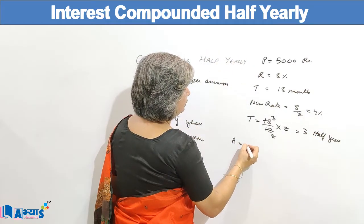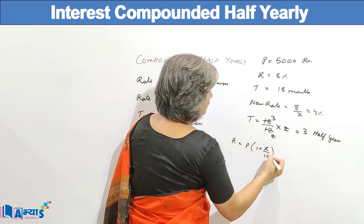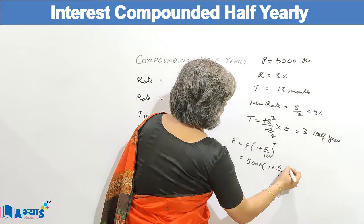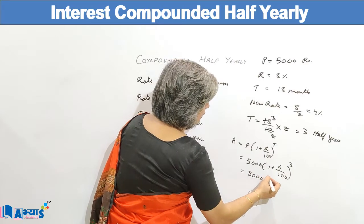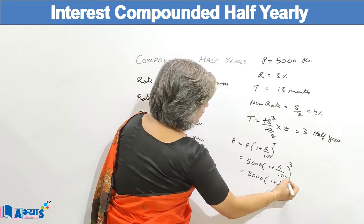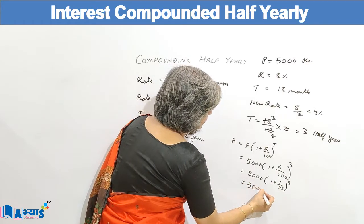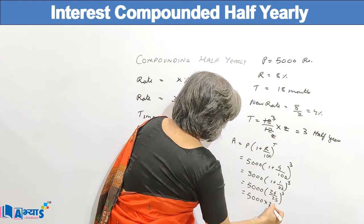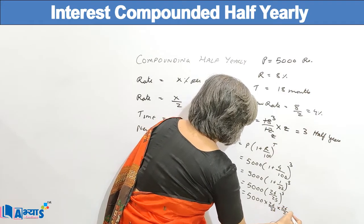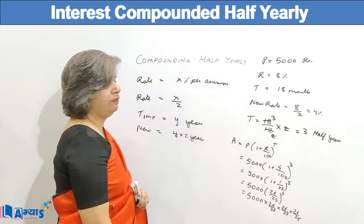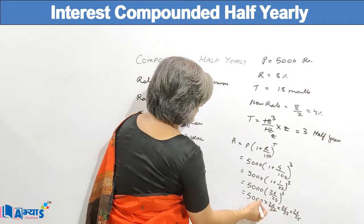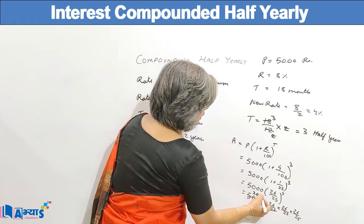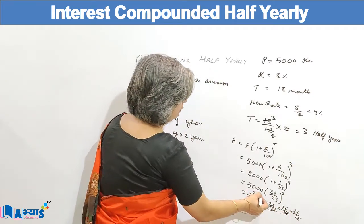The amount formula is A = P × (1 + R/100)^T. So it will be five thousand into (1 + 4/100) raised to the power three, which is five thousand into (26/25) raised to the power three. Expanding, five thousand into 26/25 × 26/25 × 26/25. Cancelling, 5000 divided by 25 into 2 gives 50, then dividing by 25 again gives 8.